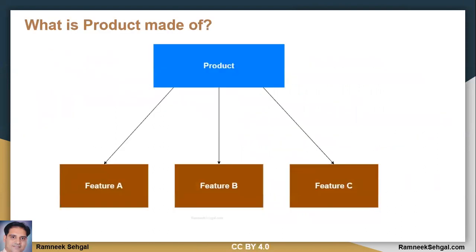Let's quickly understand what is a product. So basically a product is made of features and each feature represents a business need.